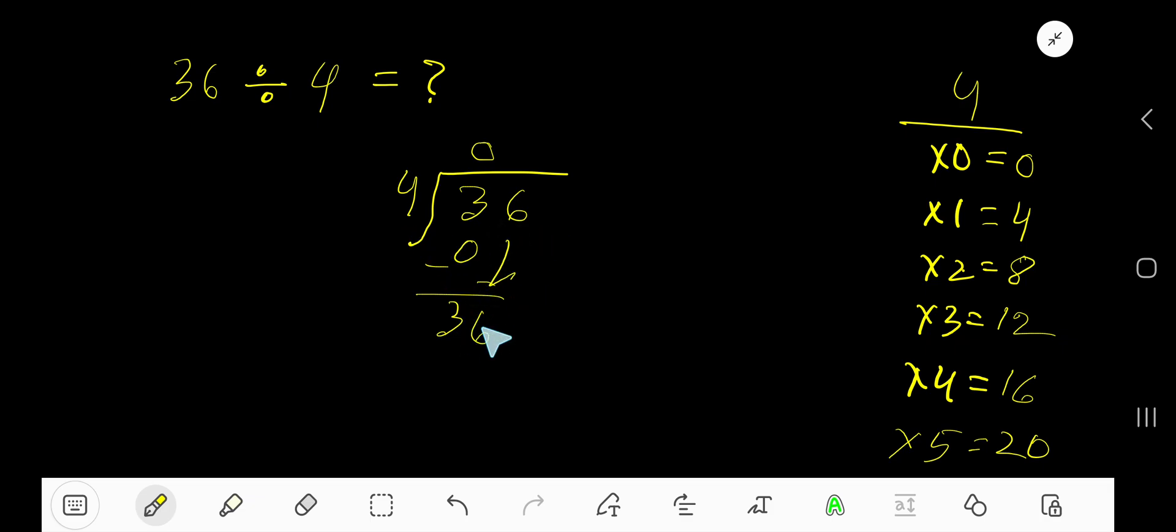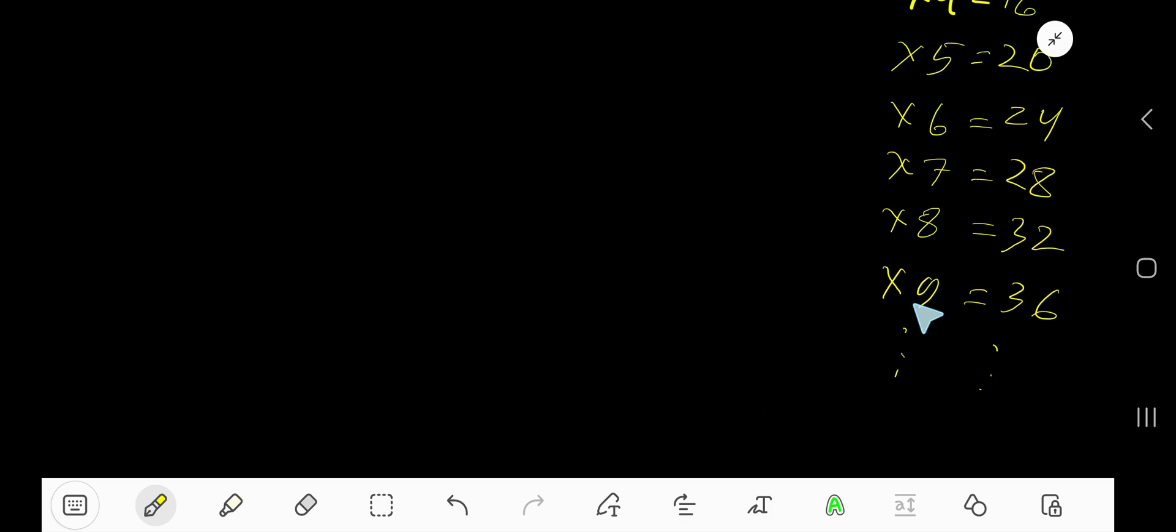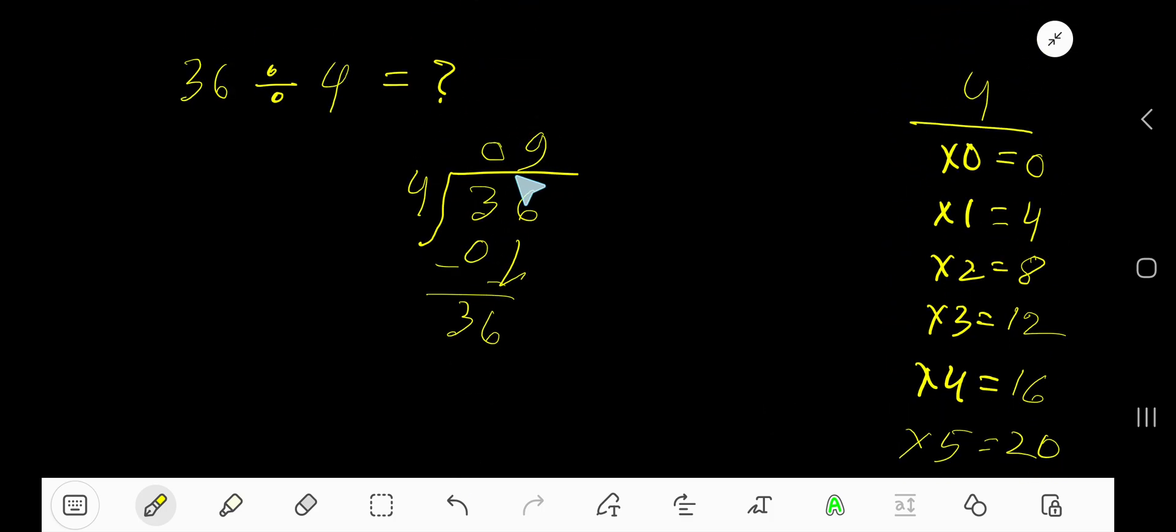Bring down this 6. 4 goes into 36 how many times? Look. 4 goes into 36, 9 times. Write 9. 9 times 4, 36. Subtract.